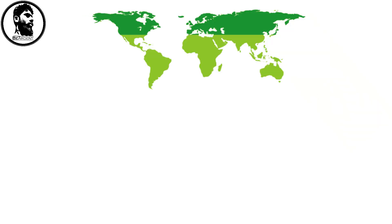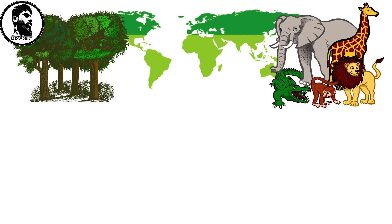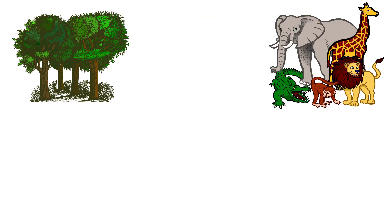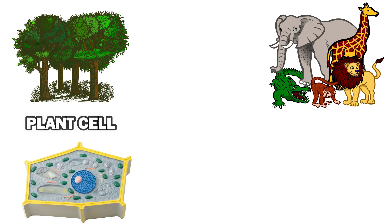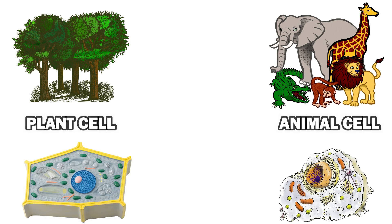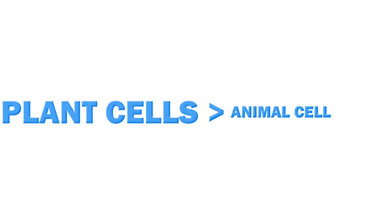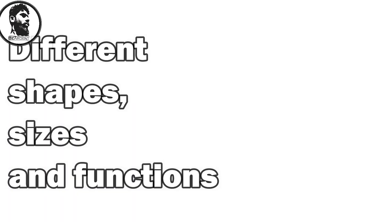In this world we have plants and animals and on the basis of these two we have two types of cells. First one plant cells which are present in plants and second animal cells which are present in animals. Obviously right? Plant cells are generally larger in size than animal cells. Plants and animal cells have different shapes, different sizes, different functions.